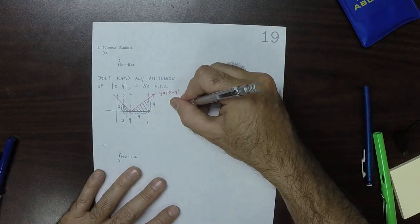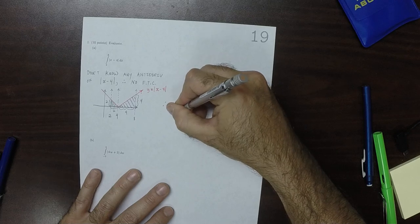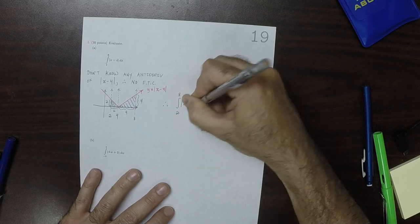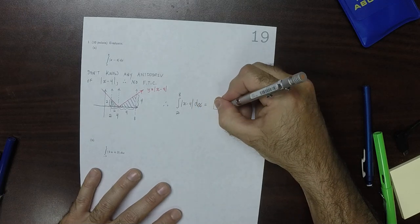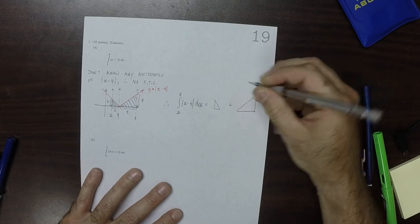So as a result, therefore the integral from 2 to 8 of absolute value x minus 4 dx is the area of the little triangle plus the area of the big triangle.